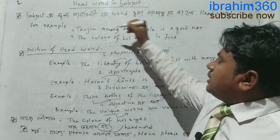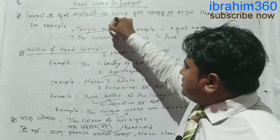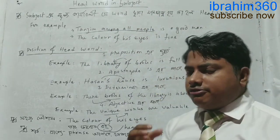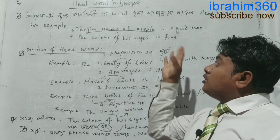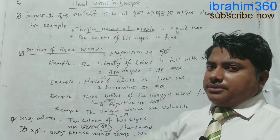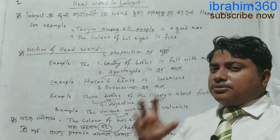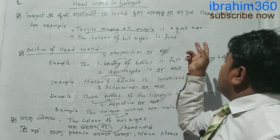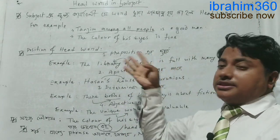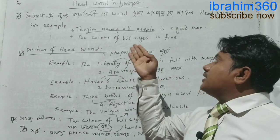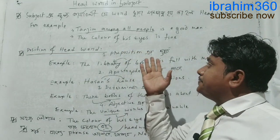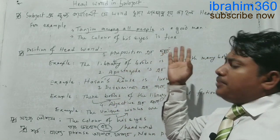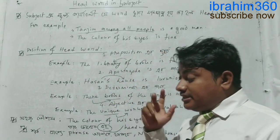For example: 'The tanzim among all people is a good man.' People are not the good man — tanzim is. So tanzim is the headword, and 'the tanzim among all people' is the subject.